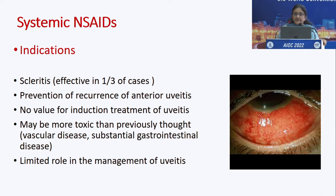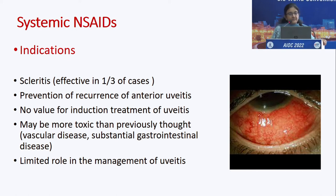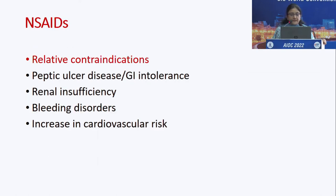Systemic NSAIDs are commonly used for scleritis cases — effective in one-third of cases — and sometimes used for prevention of recurrence of anterior uveitis. However, they do not have value for induction treatment of uveitis. They may be more toxic than previously thought and have a limited role. Relative contraindications include peptic ulcer disease, GI intolerance, renal insufficiency, and bleeding disorders.